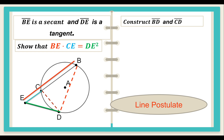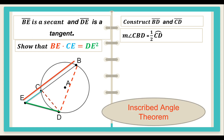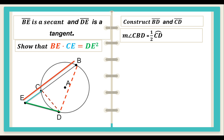Let us see the new angles and triangles that are formed. We can state that the measure of angle CBD is equal to one half the measure of arc CD, by the inscribed angle theorem. Since angle CBD is an inscribed angle, and opposite that angle is arc CD, any inscribed angle is equal to one half the measure of its intercepted arc.